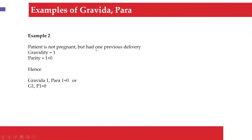Example two: a patient who is not currently pregnant but had one previous delivery. Gravidity is one, since they were pregnant once. For parity, that one delivery is assumed to have been past the age of viability, giving us 1, and no miscarriages, so plus zero. This is written as Gravida 1, Para 1+0.